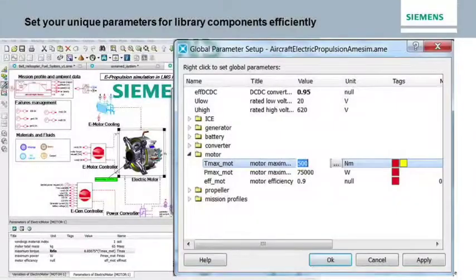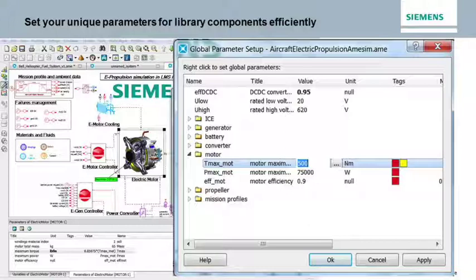Each subsystem or super component is defined with certain parameters that the user can tune when using in their models. In the case of this motor example, the user defines his or her specific torque, power, and efficiency. These parameters are also available as variables for DOEs or optimization studies.